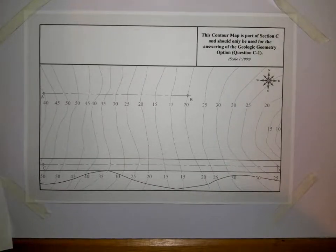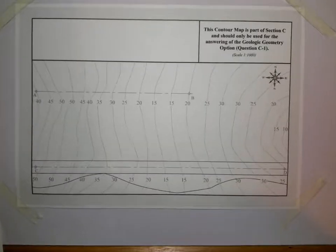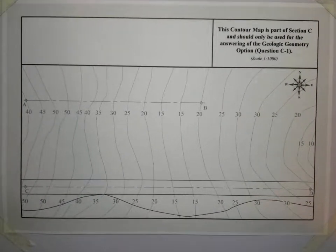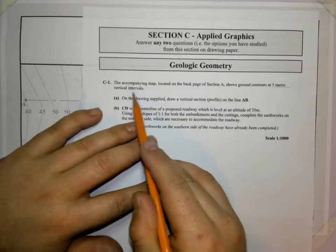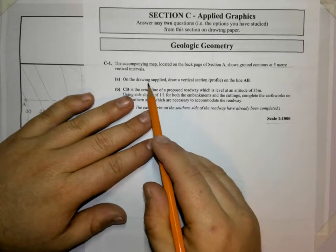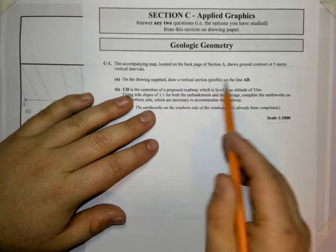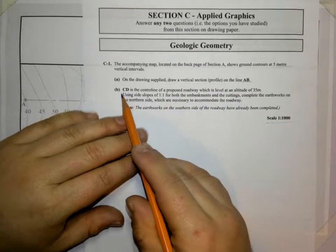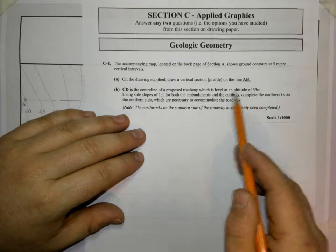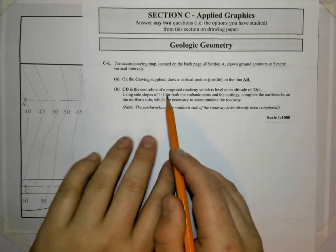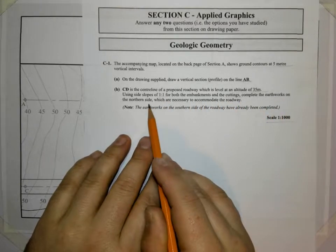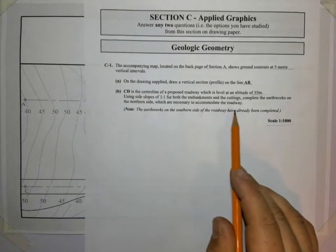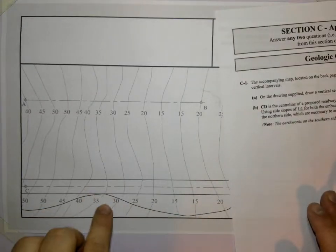Okay, welcome to this video on the 2016 ordinary level question C1 on geological geometry. The contour map located on the back of section A shows ground contours at five meter vertical intervals. Scale is one to a thousand. On the drawing supplied, draw a vertical section profile on the line AB. Part B: CD is the center line of a proposed roadway which is level at an altitude of 35 meters, using side slopes one in one for both embankments and the cuttings. Complete the earthworks on the northern side which are necessary to accommodate the roadway. The southern side is being done already.